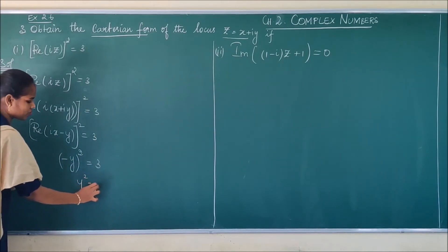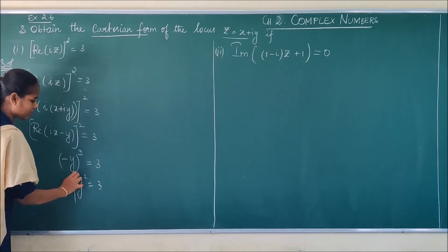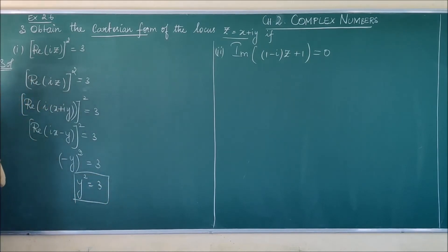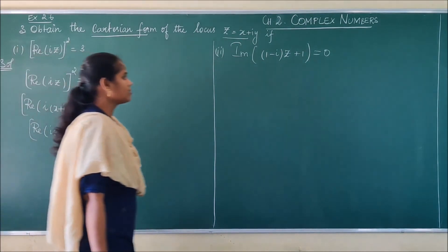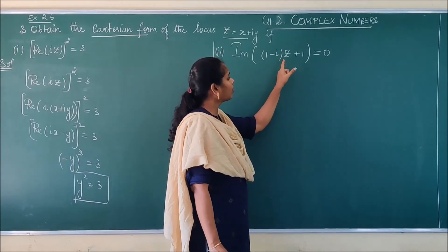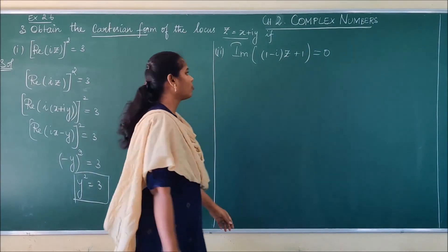Finally, my answer is y squared equals 3, and this is my Cartesian form. They have asked for the Cartesian form, not the locus. So I am giving this in Cartesian form. Next is imaginary part of (1 minus i)(z plus 1) equals 0.